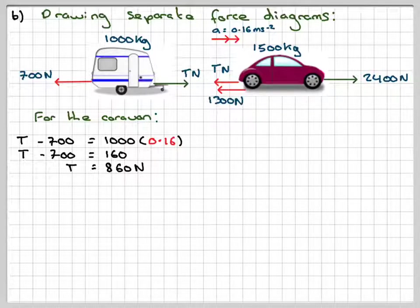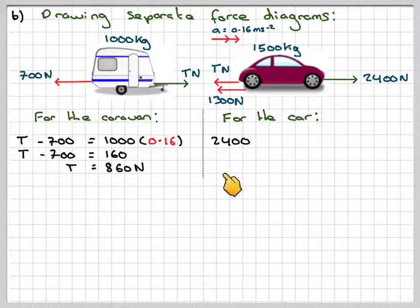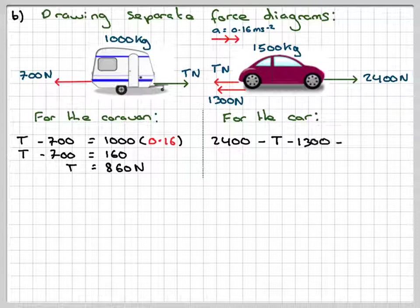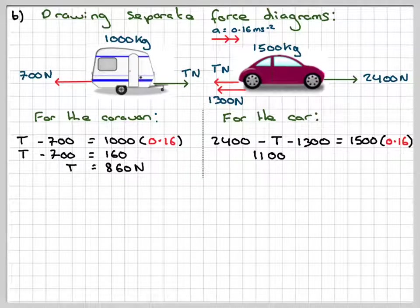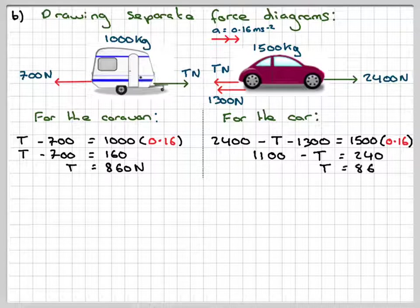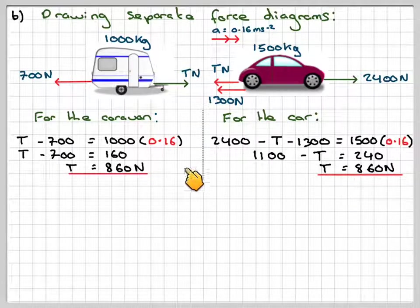We can verify using the car equation: 2,400 minus T minus 1,300 equals 1,500 times 0.16. That gives 1,100 minus T equals 240, so T equals 860 newtons again. It doesn't matter which way you do it — this is a useful check to confirm everything is correct.